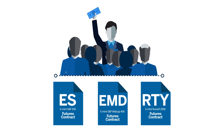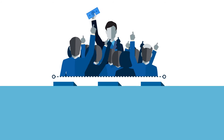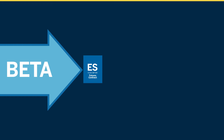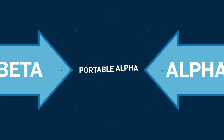Futures are a cheap and efficient way to obtain beta exposure. Now, what if you combined the incredibly liquid, efficient, and cheap source of beta, like S&P futures, with alpha derived from active fixed income investing? The result would be a strategy known as portable alpha.